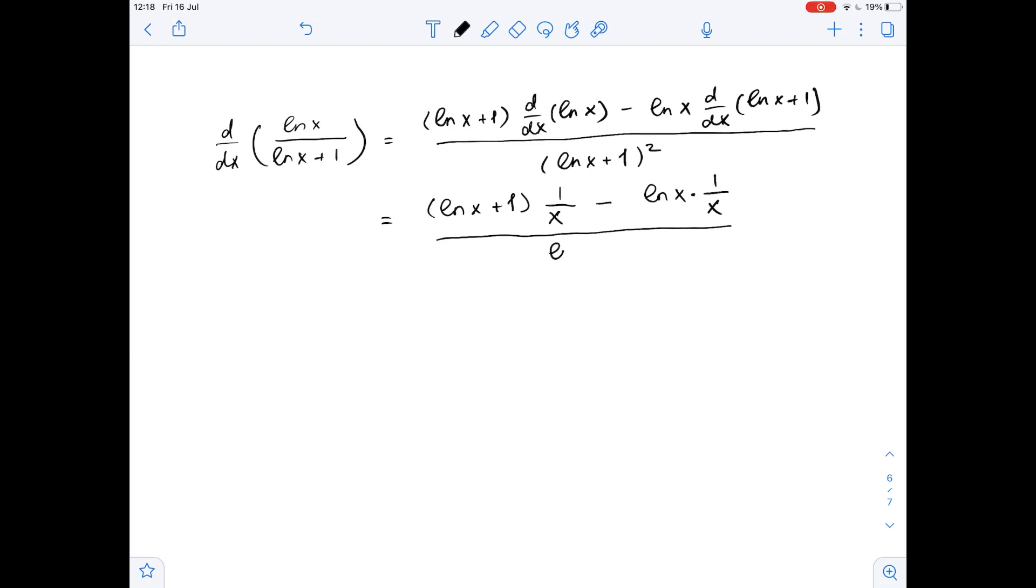Over ln of x plus 1 squared. Again, let's simplify it a bit more. So, it equals 1 over x times ln of x plus 1 minus ln of x over ln of x plus 1 squared.